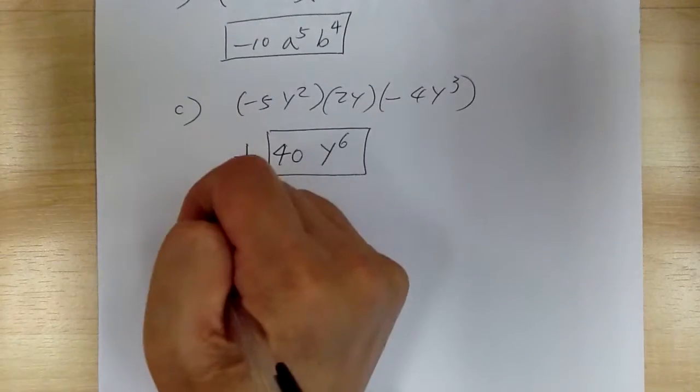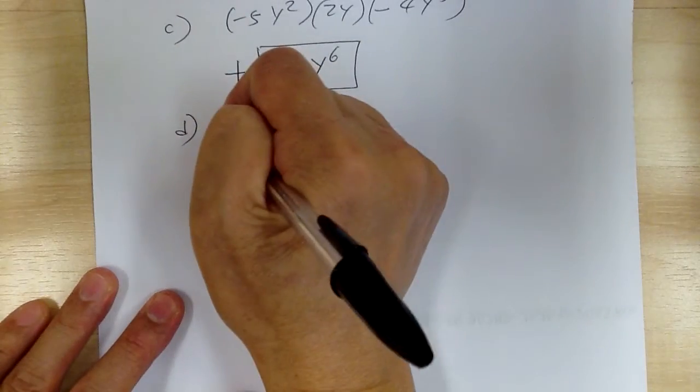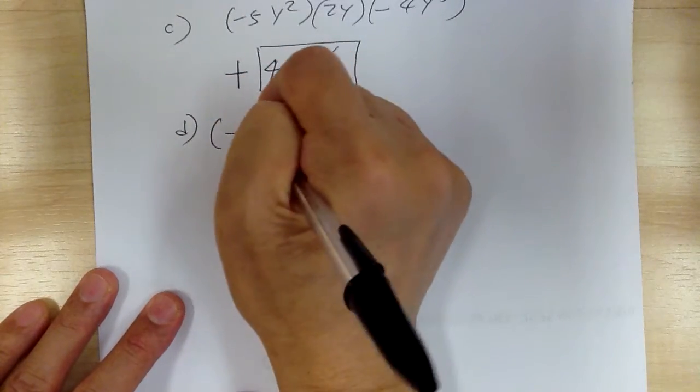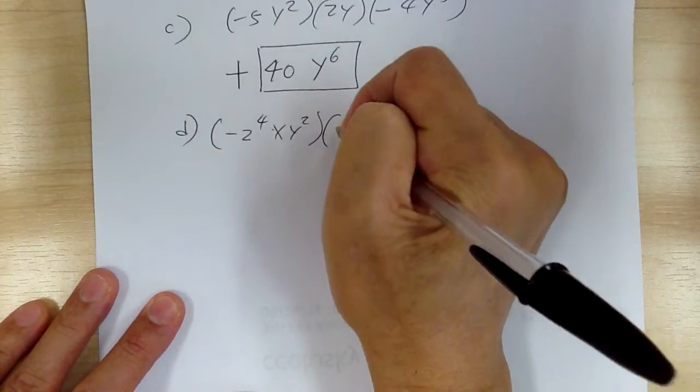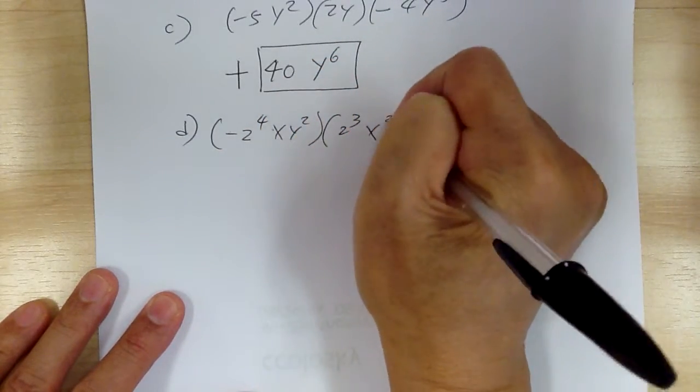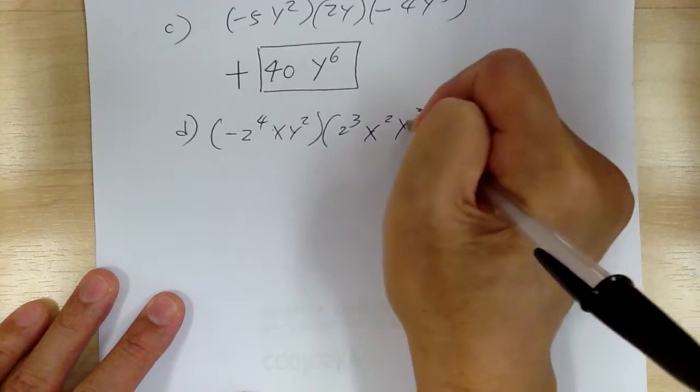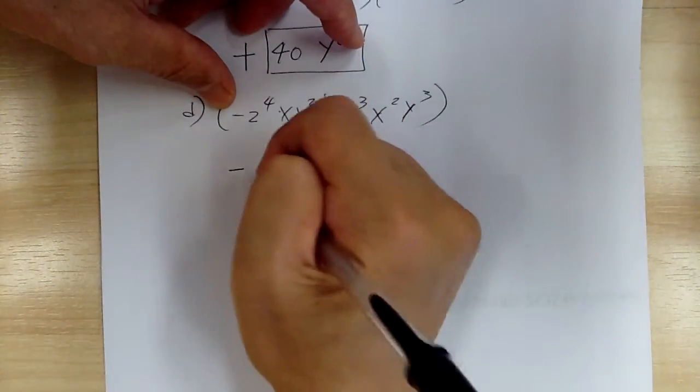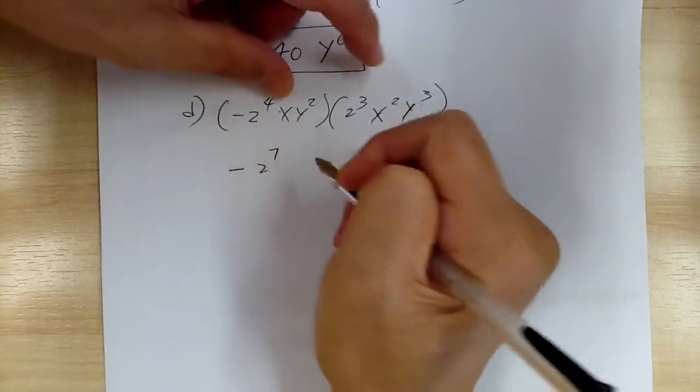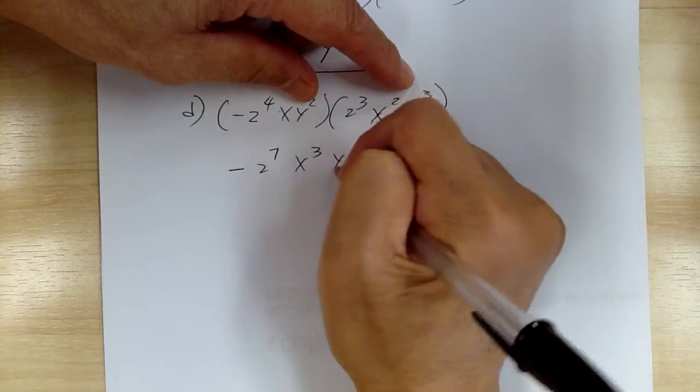Let's go to d. You have negative 2 to the 4 xy squared times 2 to the 3 x squared y to the 3. So go and multiply out. This is going to be negative 2 to the 7, and this will be x to the 3 and y to the 5.